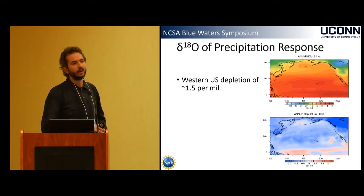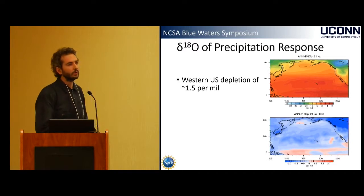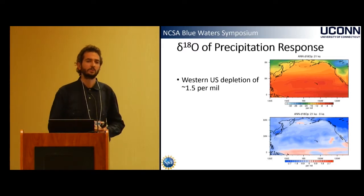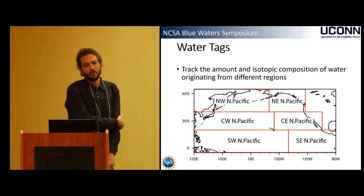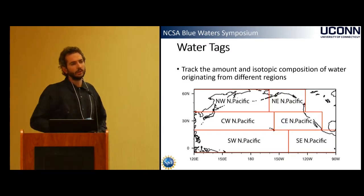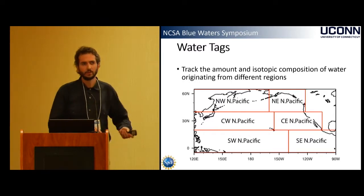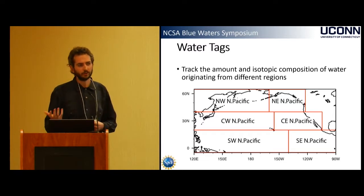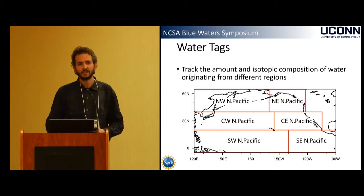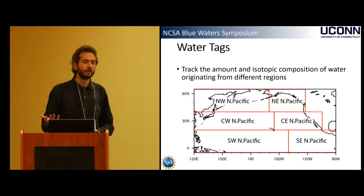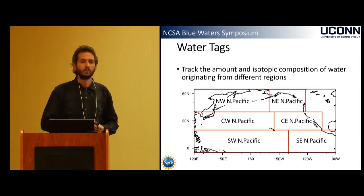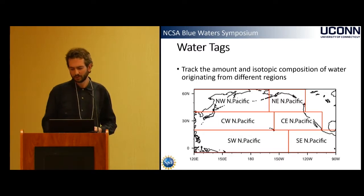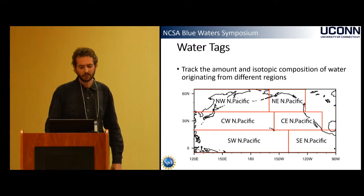Looking at oxygen isotope changes from our model, we see a depletion signal over the west coast of the US, which generally agrees with the speleothem records despite quite a bit of noise. Another unique feature of the isotope-enabled CESM is the ability to tag regions and track water vapor originating from those regions. To better understand what's driving these isotopic and precipitation changes, we can look at where different water vapor sources to the west coast of the US are coming from, breaking down water vapor from different regions in the North Pacific.